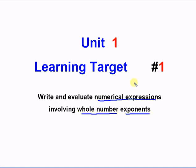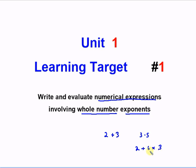A numerical expression is just putting two or more numbers together with some sort of operator in between. So 2 plus 3 is a numerical expression, 3 times 5 is also a numerical expression, or 2 plus 6 times 3. All of those are numerical expressions.